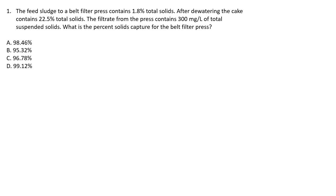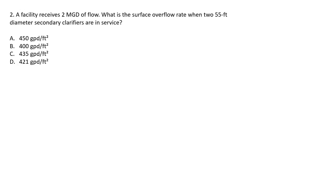Question one: the feed sludge to a belt filter press contains 1.8% total solids. After dewatering, the cake contains 22.5% total solids. The filtrate from the press contains 300 milligrams per liter of total suspended solids. What is the percent solids capture for the belt filter press? A) 98.46%, B) 95.32%, C) 96.78%, or D) 99.12%.